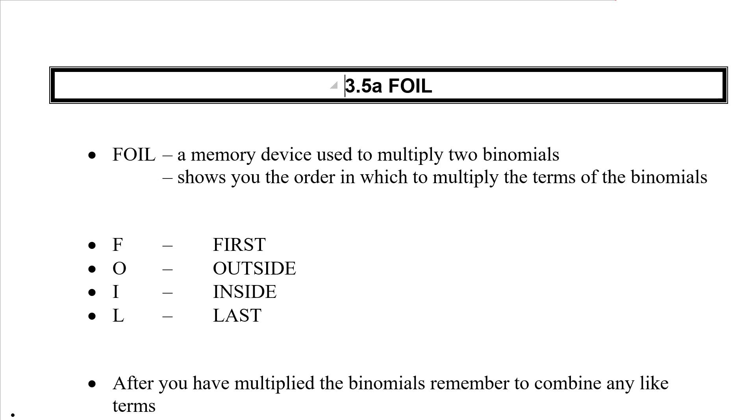Now 3.5 is a rather long lesson in my opinion, so I have broken it down into smaller sections. We're going to work on 3.5 for the next couple days. The first thing we have to do in 3.5 is all about multiplying binomials. We've got a little memory device here that helps us, it's called FOIL.